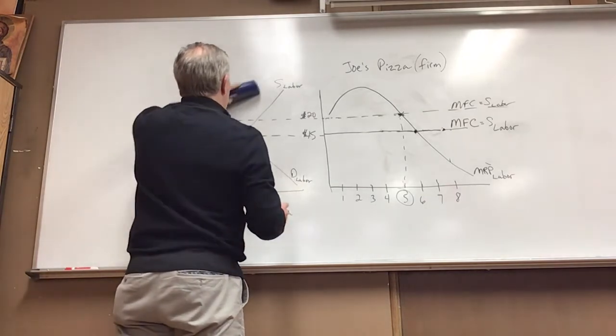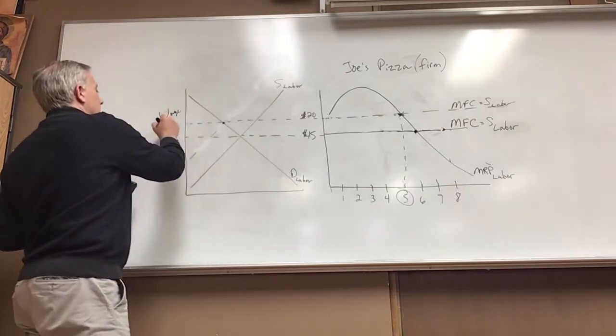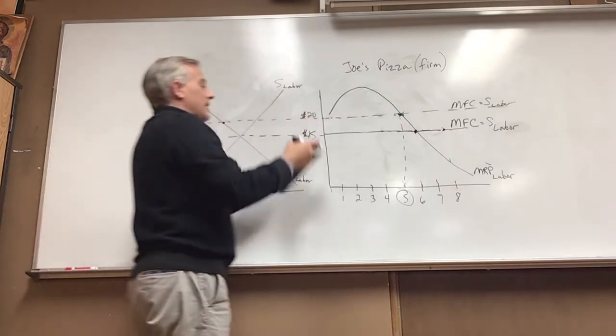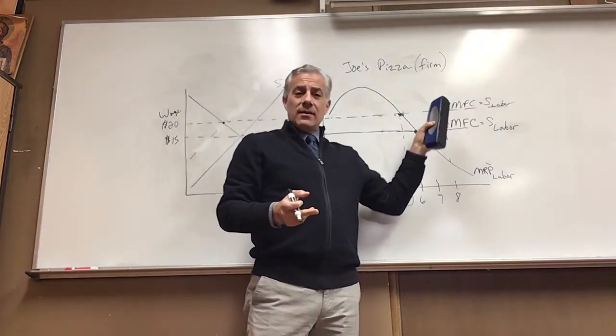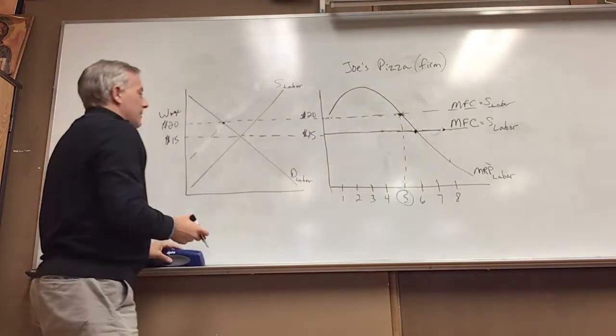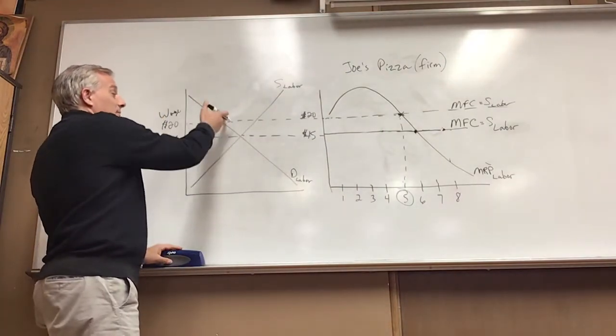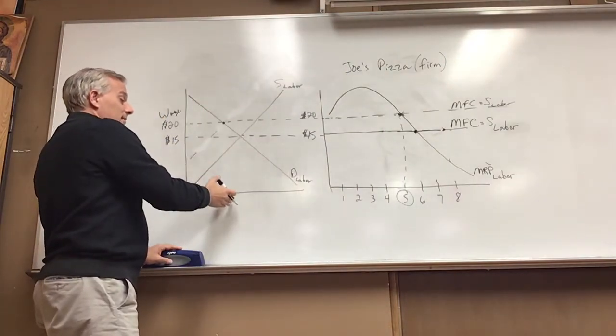And this is an argument against, let's say the wage got increased by the imposition of a minimum wage. So let's say there's a minimum wage set at $20, it would be the same impact. So the minimum wage would lead to not only fewer workers getting hired nationally, but Joe's Pizza hiring one fewer worker.